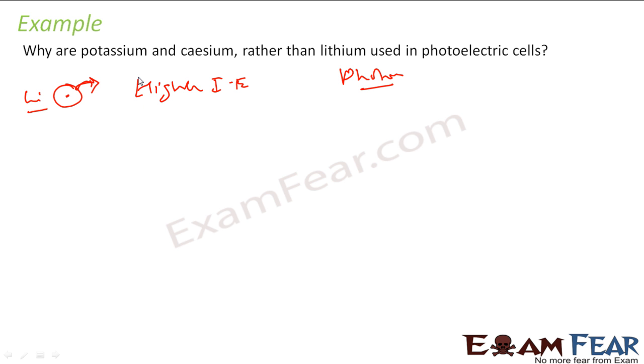But if you talk about potassium or cesium, the size is big and it can easily pull out the electron. They have lower ionization energy. Since they have low ionization energy, even the energy from the photon, the light can pull out the electrons from the atoms of the potassium and cesium. And hence they are used in photoelectric cells.